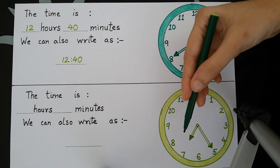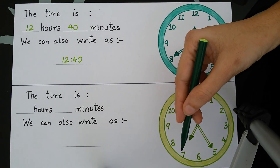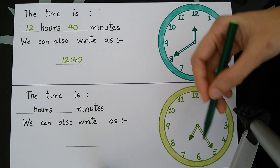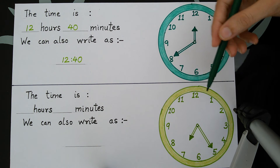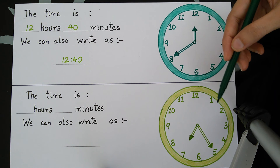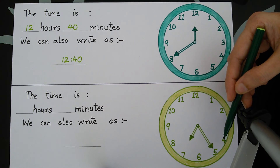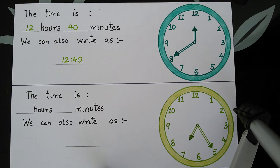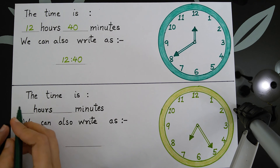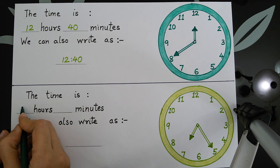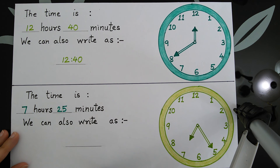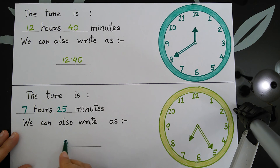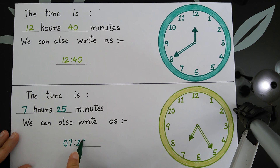Now on this clock we can see the small hand is on 7 and the big hand is on 5. So the time is 7 hours 25 minutes. How did we get 25? — 5, 10, 15, 20, 25. So we will write it as 7 hours 25 minutes. We can also write it as 7:25.